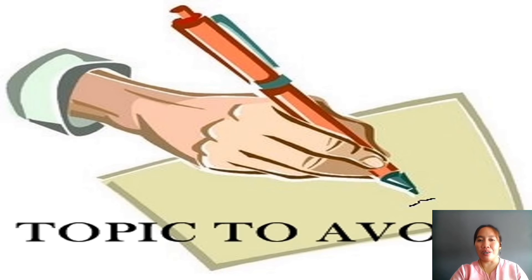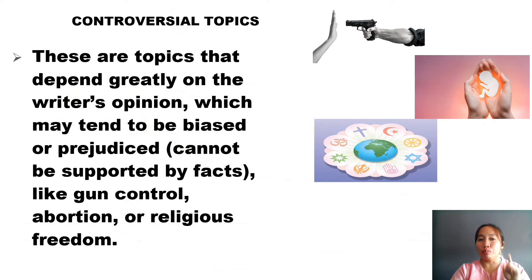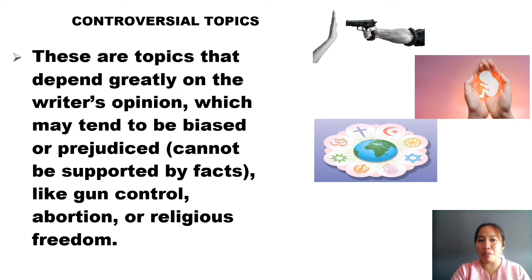As a researcher, aside from knowing the guidelines or criteria in choosing a research topic, it is also important for you to identify research topics that you need to avoid. Number 1: controversial topics. These are topics that depend greatly on the writer's opinion, which may tend to be biased or prejudiced, and cannot be supported by facts — like gun control, abortion, or religious freedom.